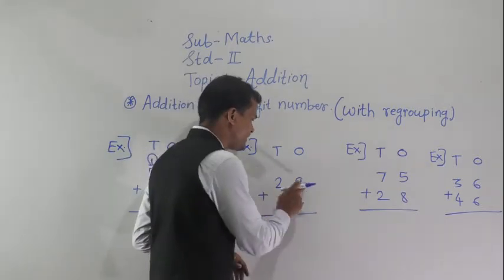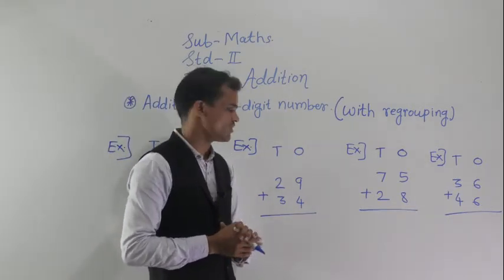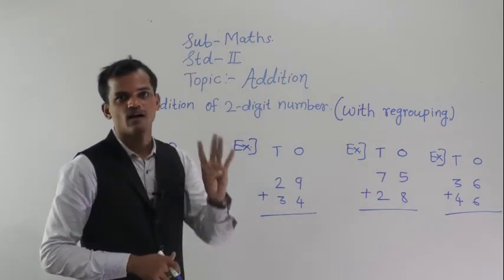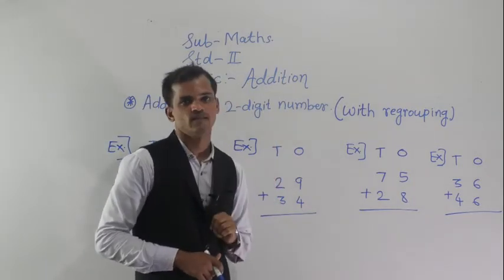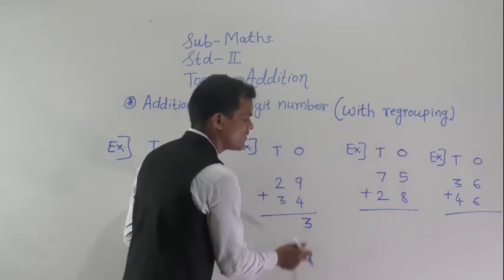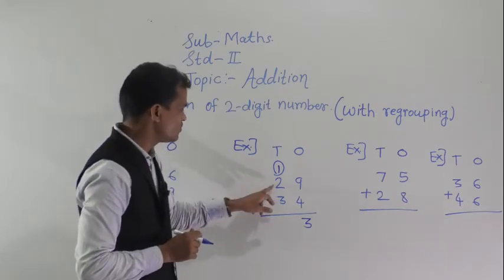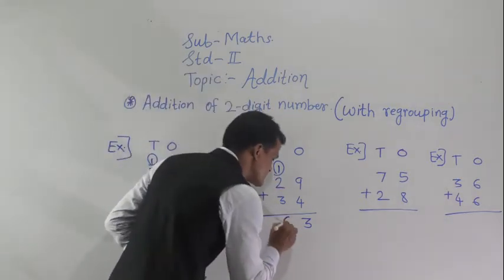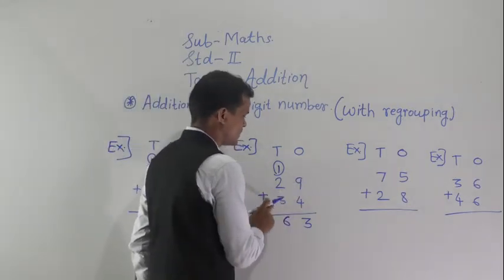Next example: 29 plus 34. Always start from the ones place. Add this column: 9 plus 4. After 9, count 4 fingers — 10, 11, 12, 13. So 9 plus 4 equals 13. Write 3 at the ones place and carry 1 to the tens place. Then 2 plus 3 equals 5, and 5 plus 1 carry forward equals 6. So 63 is the sum of 29 and 34.